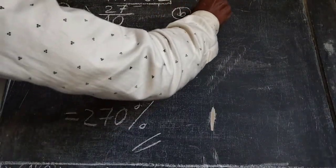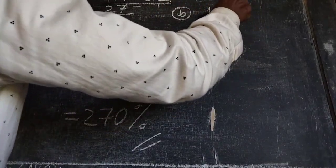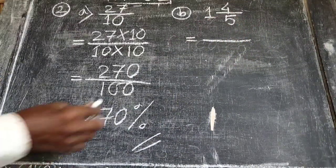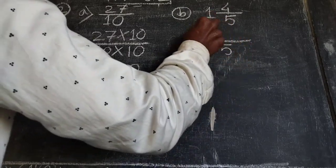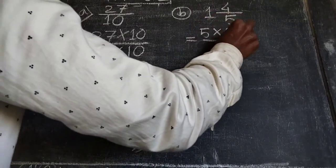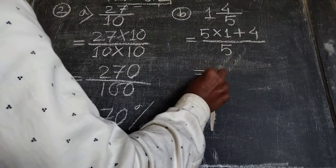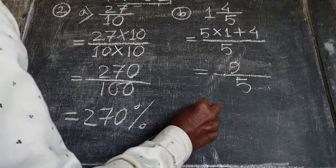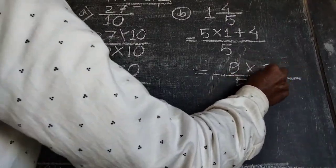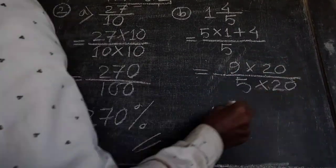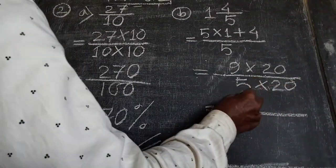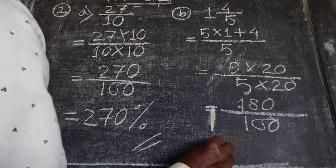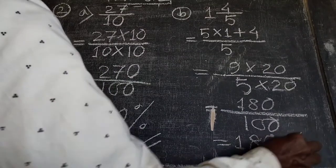Next, 1 and 4 by 5. It is a mixed number, so we write 5 into 1 plus 4, which equals 5 plus 4 equals 9. Multiplying by 20 gives 100 in the denominator, and 9 into 20 equals 180. So it is 180 percent.